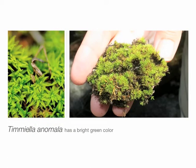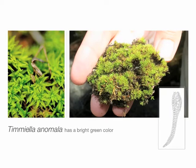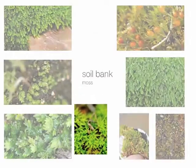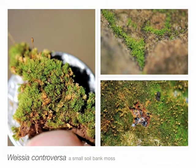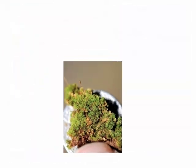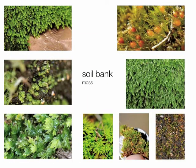Our next species is Timmiella anomala, another member of the family Pottiaceae. It grows in moist shaded soil and has a bright green color due to the many cell layers in the leaf — the multi-stratus layering. We also see Weissia controversa in the same habitat as Timmiella but smaller, and again Pottiaceae. Hopefully when you see the basal rosette you might guess what family this species belongs to.